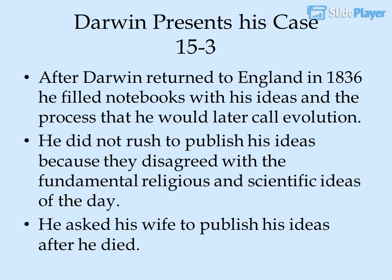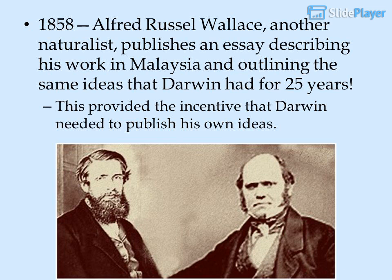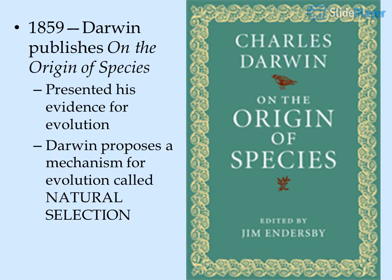Darwin presents his case: after returning to England in 1836, he filled notebooks with his ideas about the process he would later call evolution. He did not rush to publish because his ideas disagreed with the fundamental religious and scientific ideas of the day, and he asked his wife to publish his ideas after he died. In 1858, Alfred Russell Wallace, another naturalist, published an essay describing his work in Malaysia outlining the same ideas Darwin had held for 25 years. This provided the incentive Darwin needed to publish his own ideas. In 1859, Darwin published On the Origin of Species, presenting his evidence for evolution.